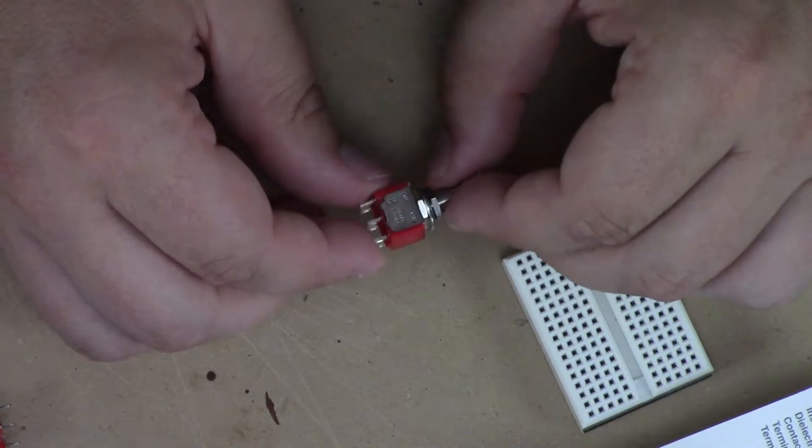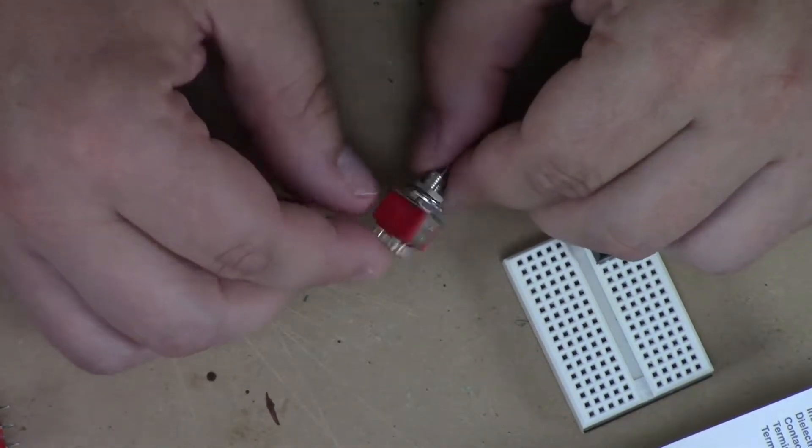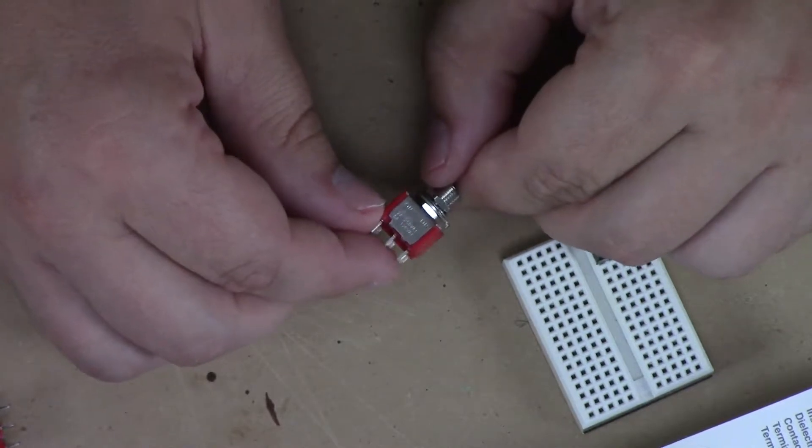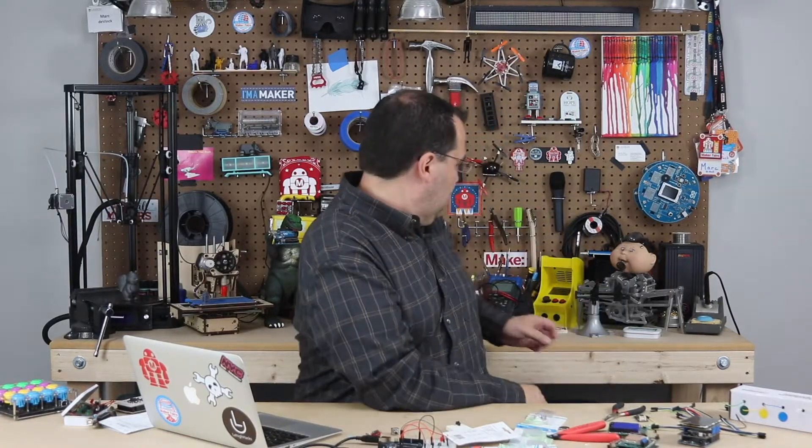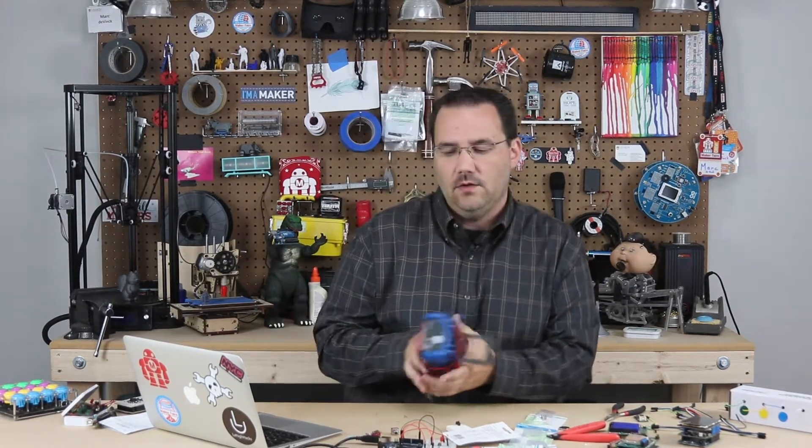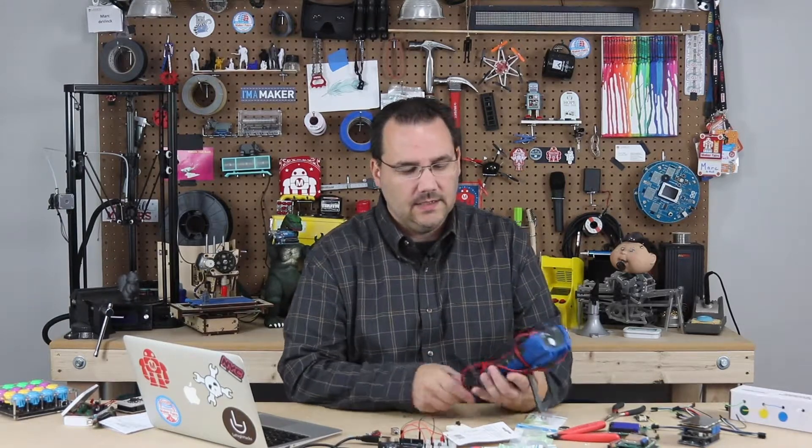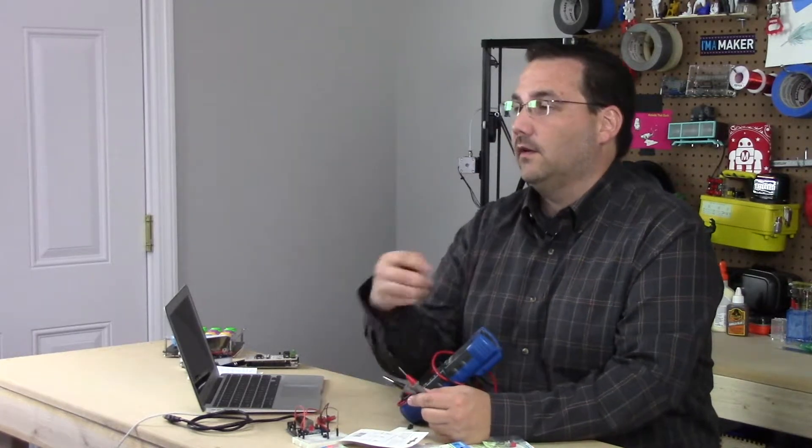If you're not sure what kind of switch you have, they are typically labeled on the side. This one says on, on. It also gives you a little bit more information as to the voltage tolerances. Something you really should have, got one right here on my bench, is a multimeter and you can use this with the continuity tester and you can attach it to the leads on your switch and you can see whether it's making a circuit or not.